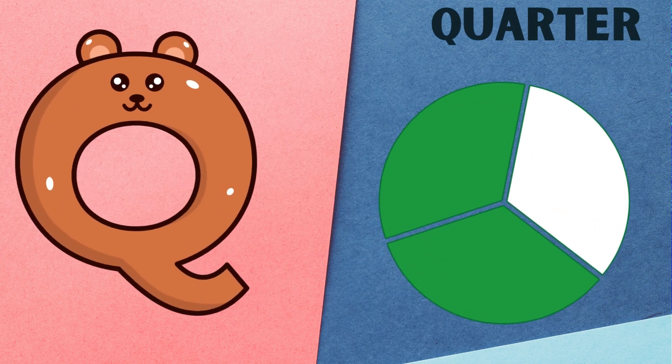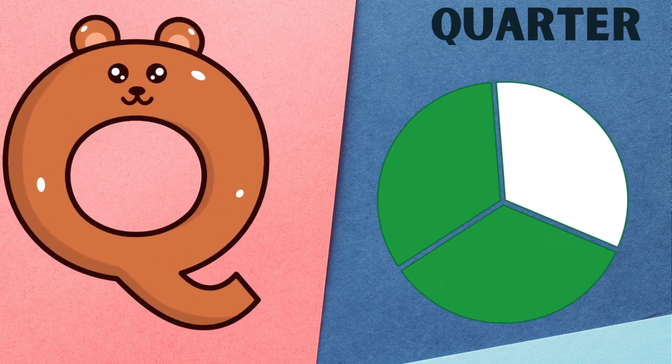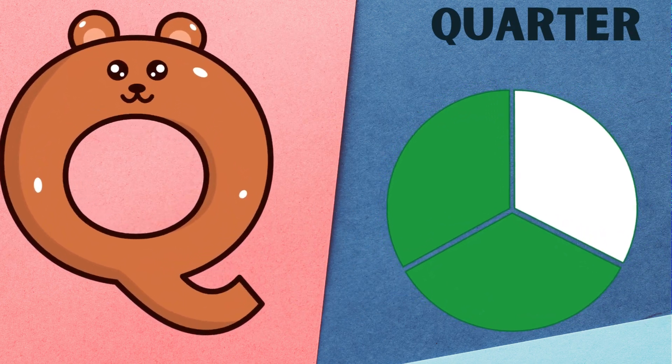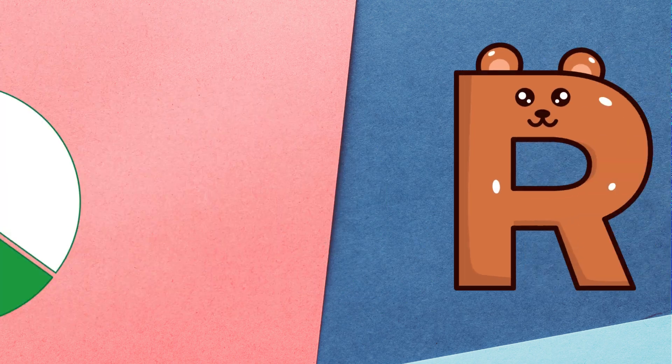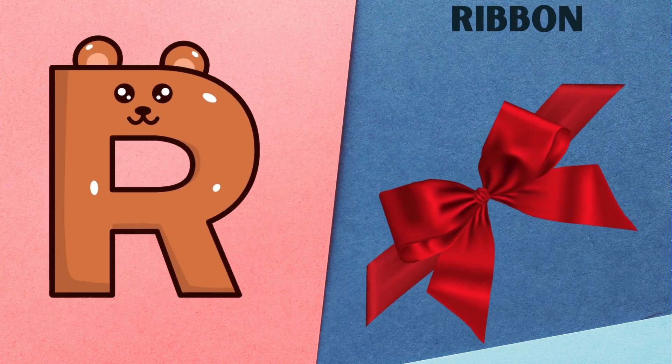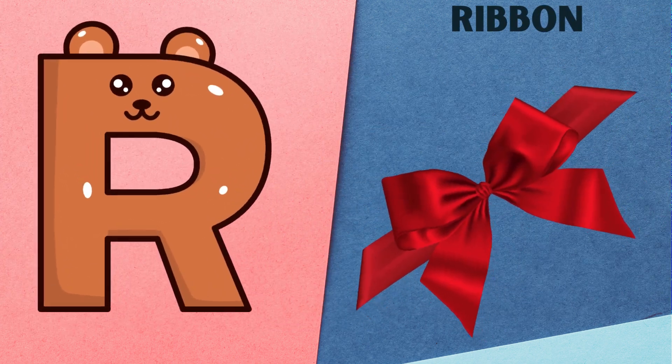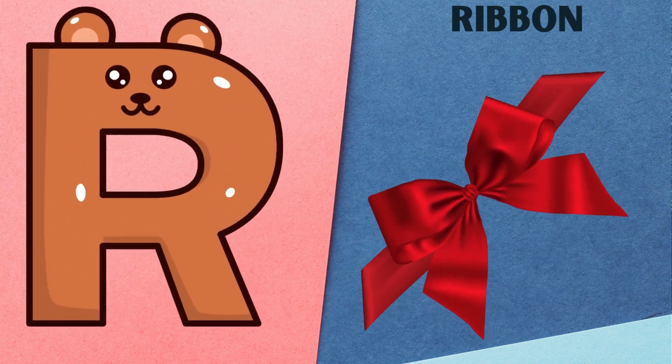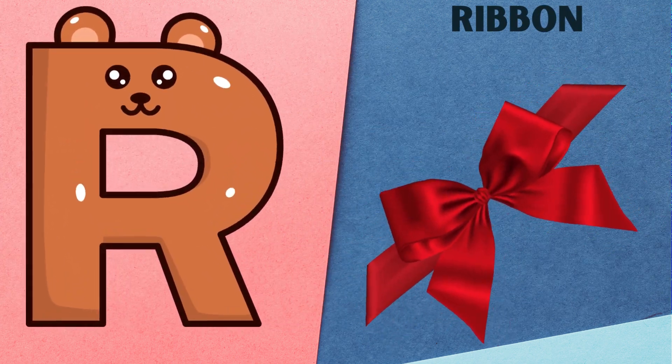Q is for quarter, qu, qu, quarter. R is for ribbon, r, r, ribbon.